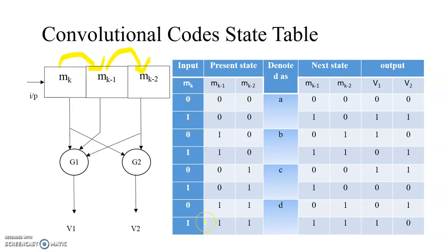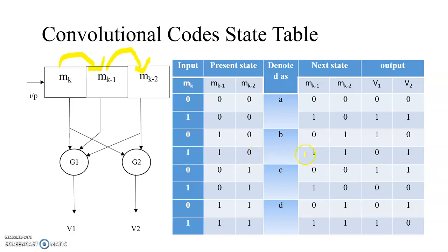I will randomly take this one. The present state is 1,0, and the input is 1. The next state will be 1 going to Mk minus 1, and this 1 going to Mk minus 2, so the next state is 1,1. The output is 1 XOR 1 XOR 0, so V1 is 0. And V2 is 1 XOR 0, which is 1. Likewise, we have to prepare the whole state table.